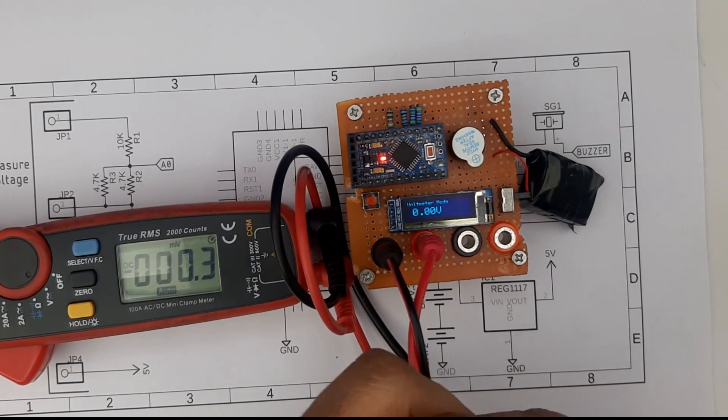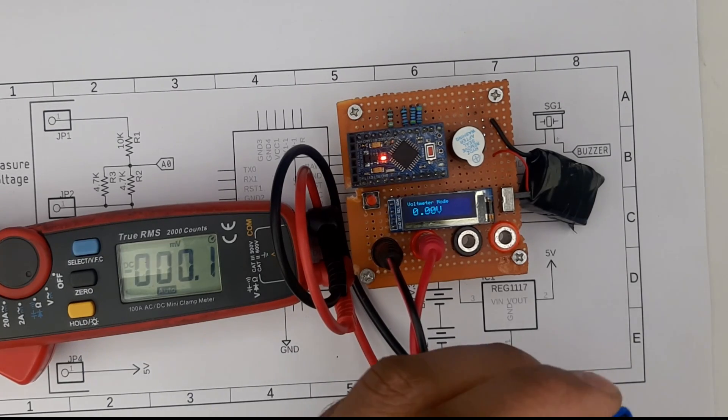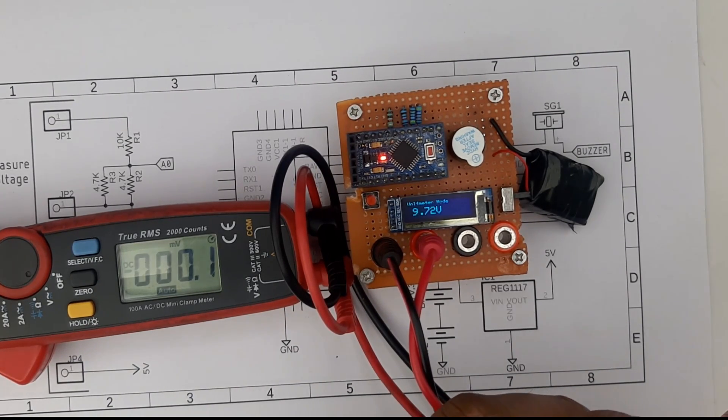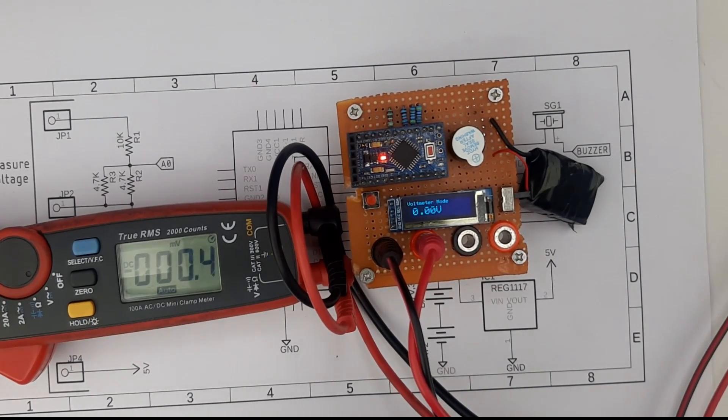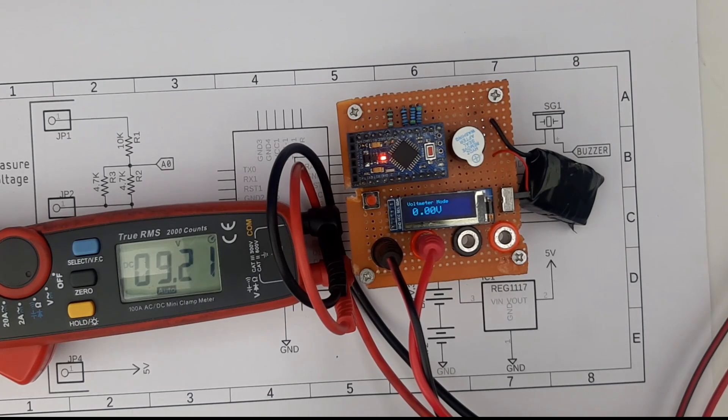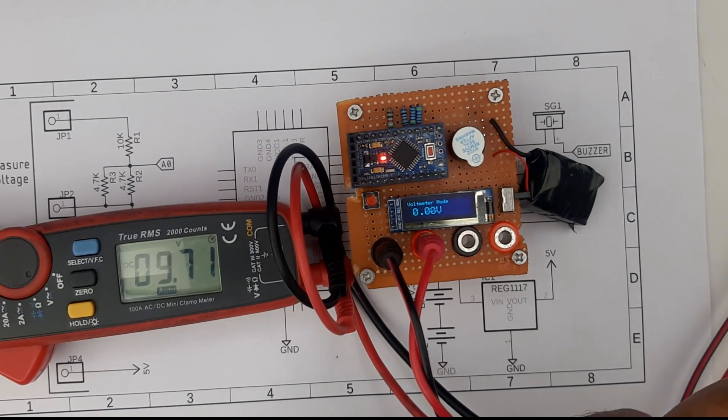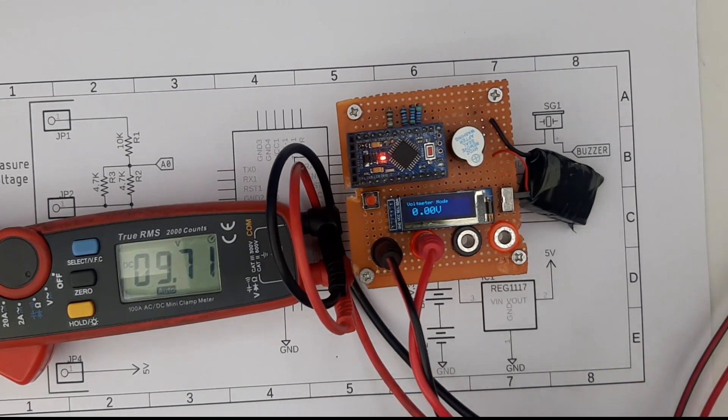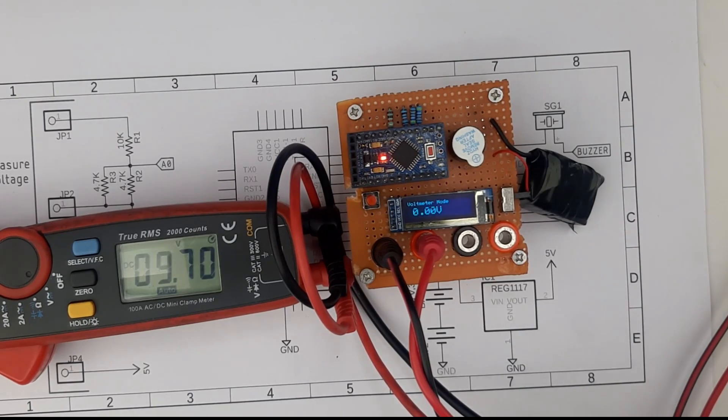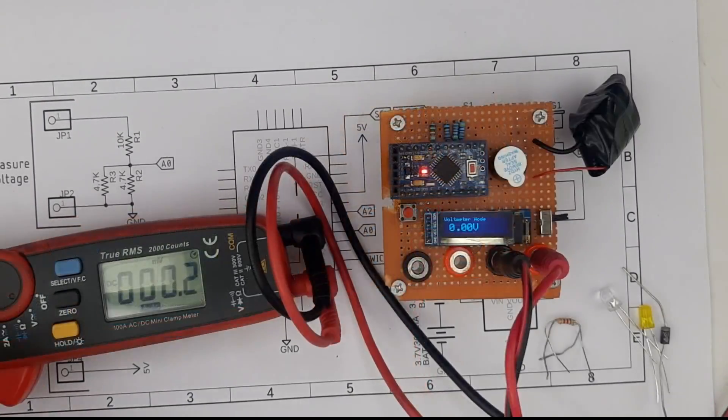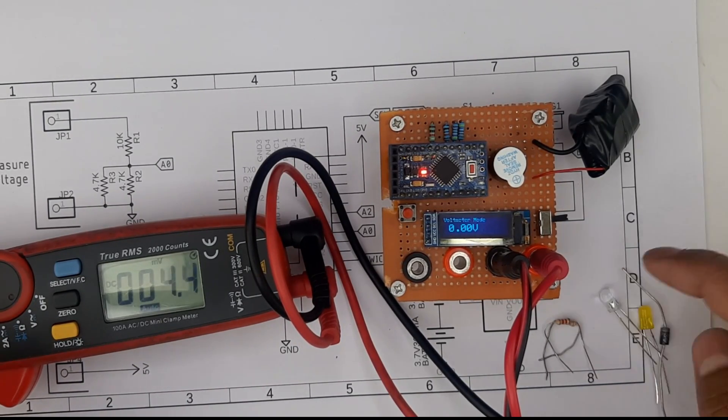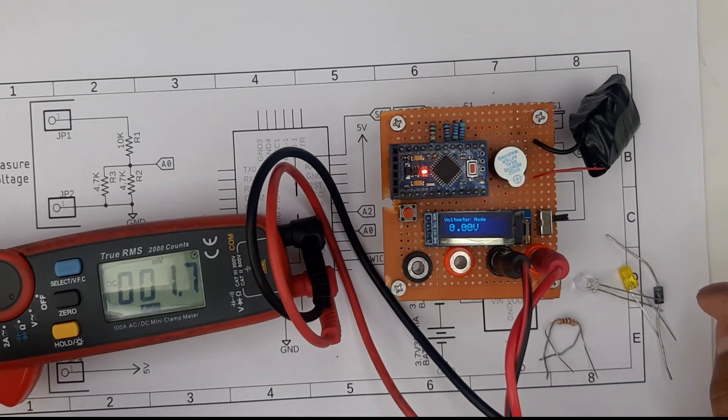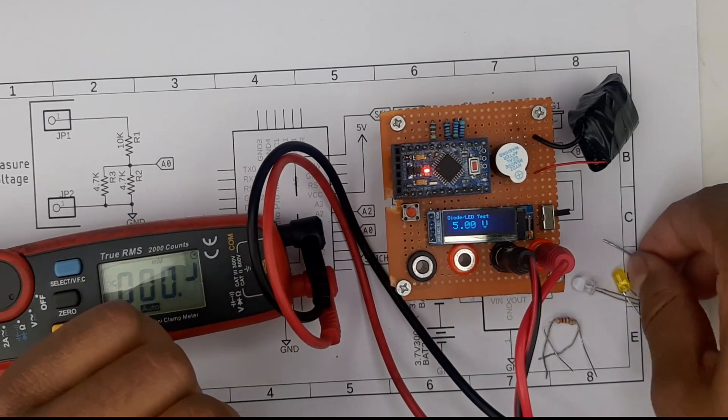Now let's see how you can measure this 9-volt battery. As you can see it's showing 9.72 volts. If I test with this multimeter it will show similar results: 9.71 volts. The higher you go the more accurate this meter gets. To show you other features I have some resistors, LEDs, and diodes. We'll test these one by one. Let me go to the next mode. Next is the diode test mode.